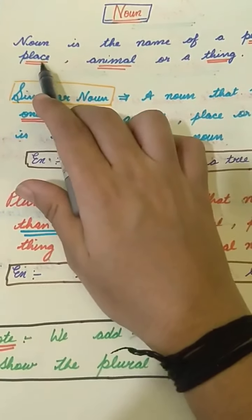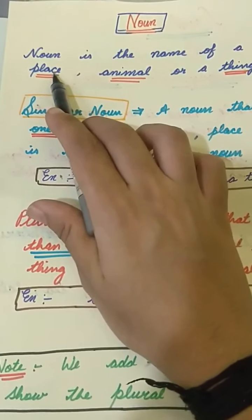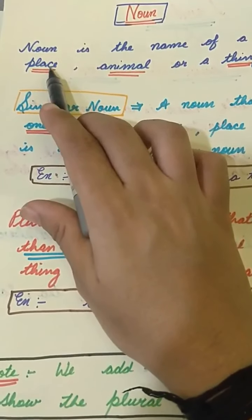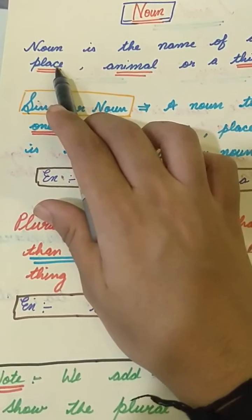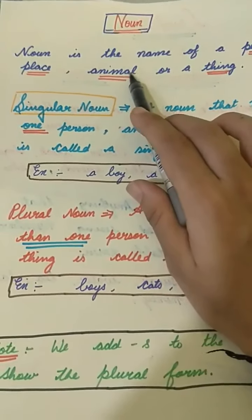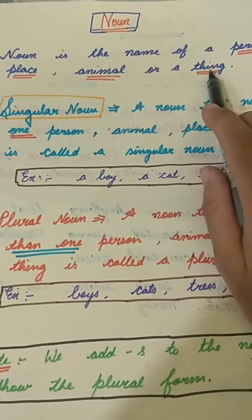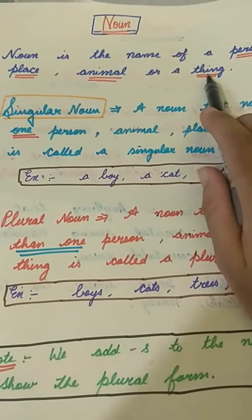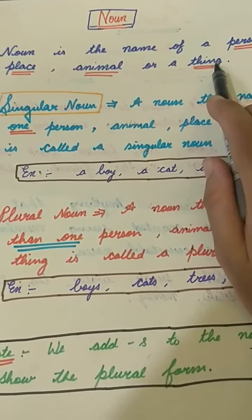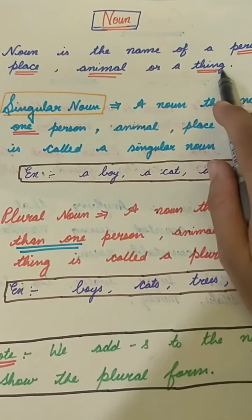It can be any place. School is also a place. Park is also a place. Taj Mahal is also a place. Animal — as you all know: dog, cat, tiger, lion. Thing can be a non-living thing like a bottle, book, table, cap. That means a non-living thing.